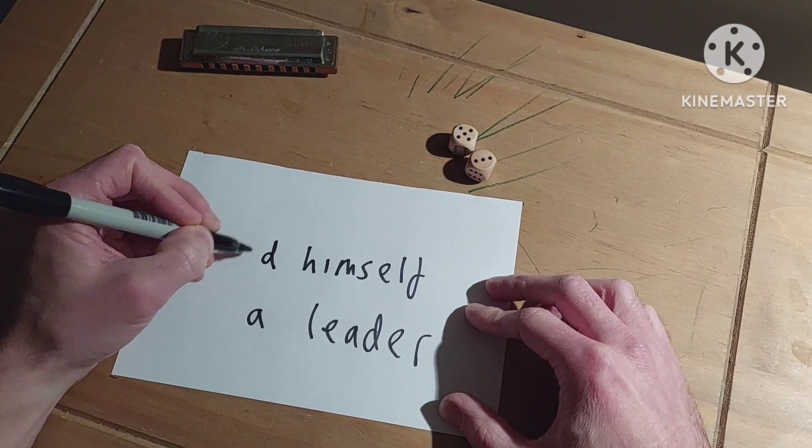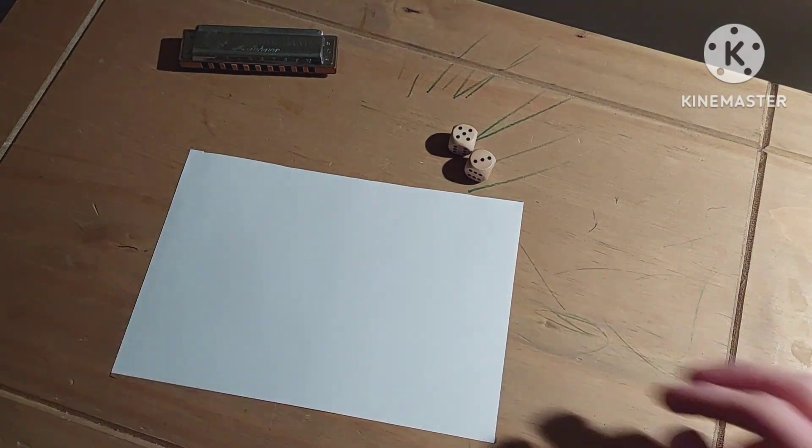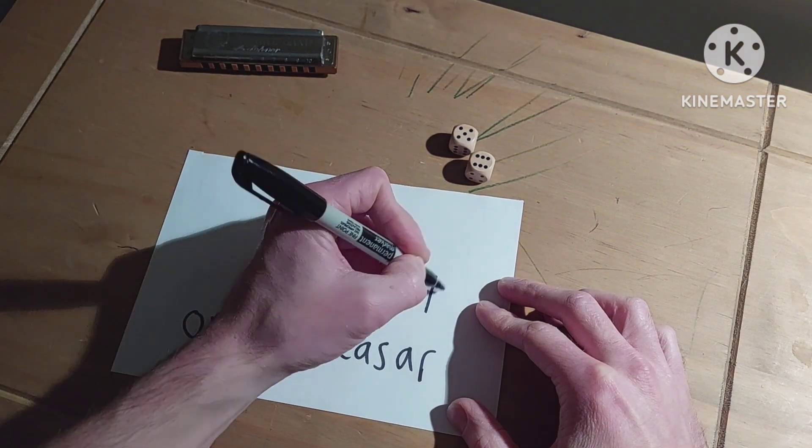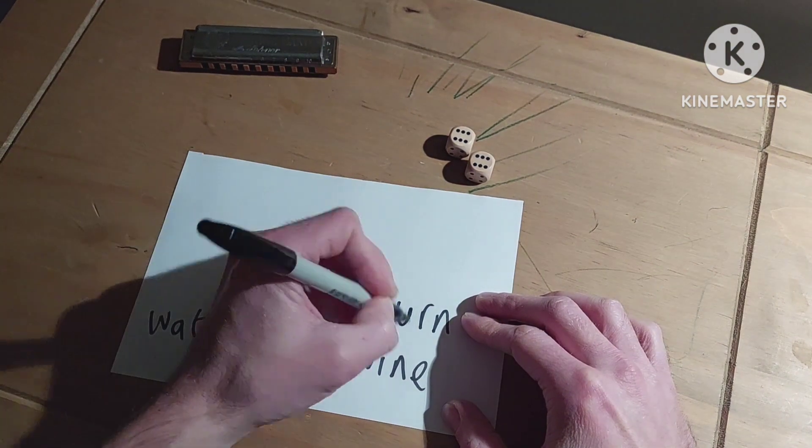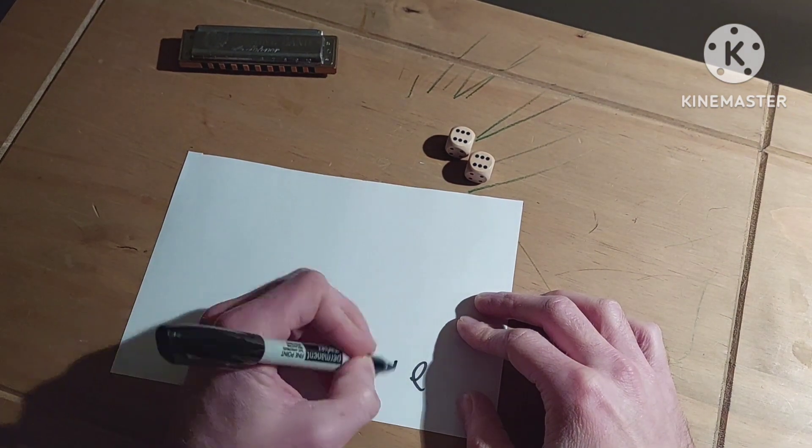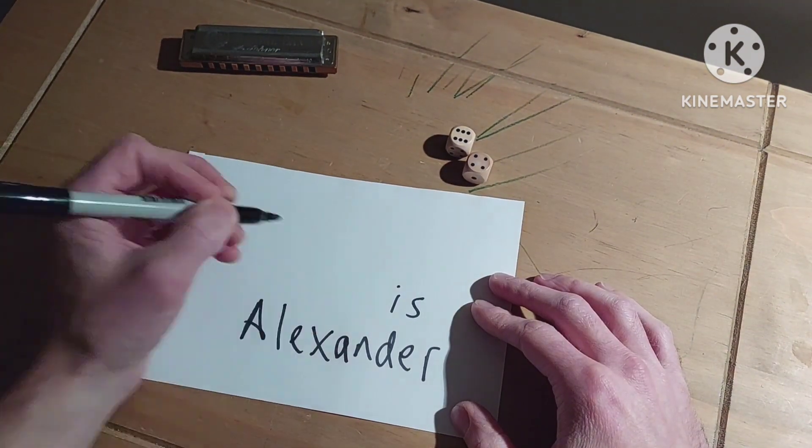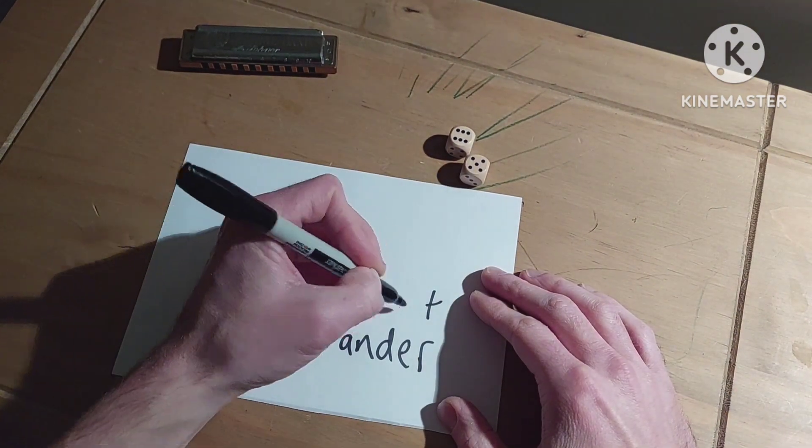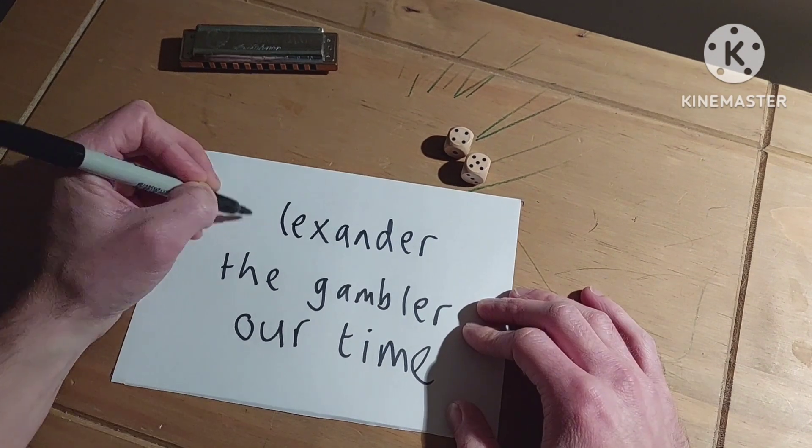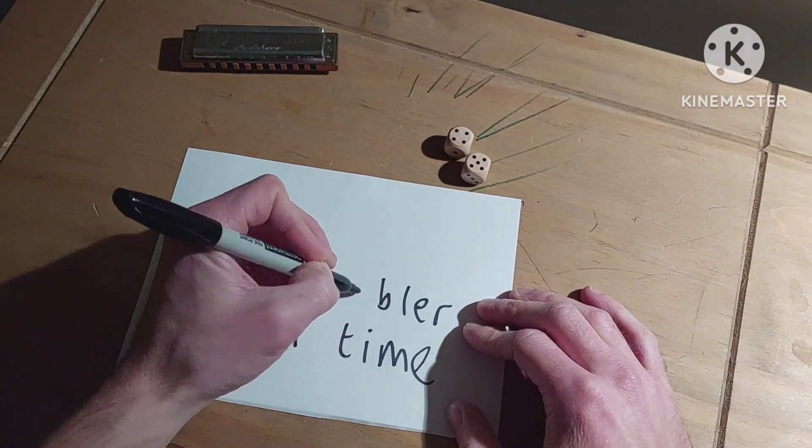He fancied himself a leader, a Churchill or a Caesar, thought he could turn water into wine. His name is Alexander, he'd lie and cheat and slander. Alexander, the gambler of our time.